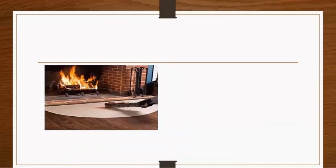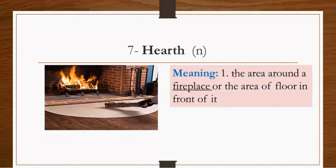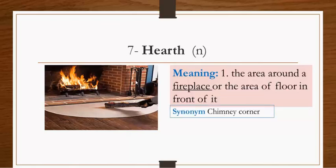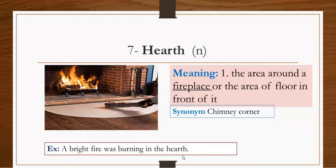During winter and cold nights, people use fire, especially in the chimney. When they have something like this, they put the wood in this place, or the area in front of it. This is called hearth. Hearth is a noun meaning the area around the fireplace or the area of floor in front of it. The area inside and outside the burning place is called hearth. Synonym: chimney corner. This place is called chimney corner, but not the chimney itself. Example: A bright fire was burning in the hearth.